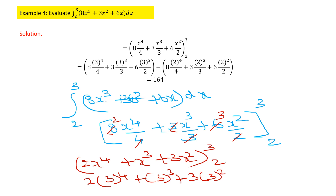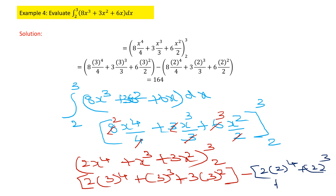First apply the upper limit 3: 2×3⁴ plus 3³ plus 3×3². Then put a minus sign and substitute the lower limit 2: 2×2⁴ plus 2³ plus 3×2². Simplifying all of this gives a final answer of 164.